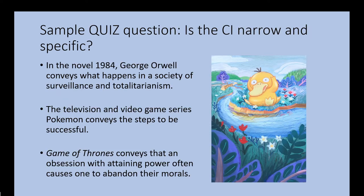Take a look at these examples and test them each by yourself — are they narrow and specific? Number one is not specific: what does happen in a society of surveillance and totalitarianism? Number two is also not narrow and specific — what are the steps to be successful? According to Pokemon, the steps are to catch animals against their will, force them to battle, and use them for personal success. Finally, the example at the bottom of the screen is narrow and specific — it clearly articulates what is happening in the thesis.